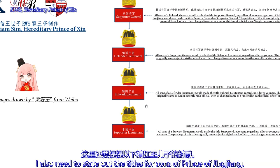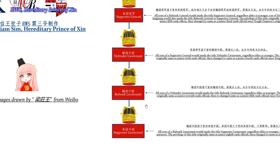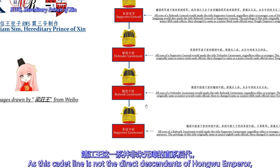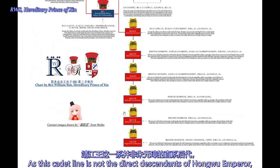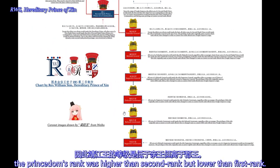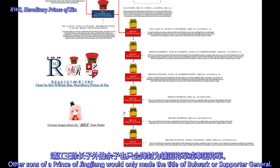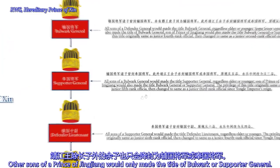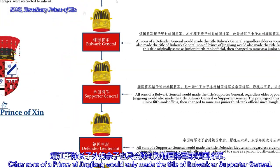I also need to point out the titles for sons of the Prince of Jingjiang. As this cadet line was not a direct descendant of the Hongwu Emperor, the princedom's rank was higher than second rank but lower than first rank. Other sons of a Prince of Jingjiang would only receive the title of Bulwark General or Supporter General.